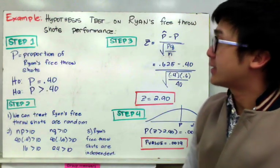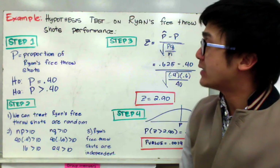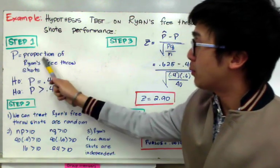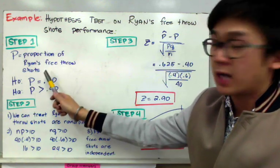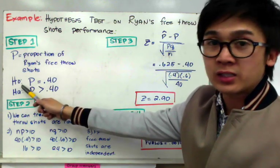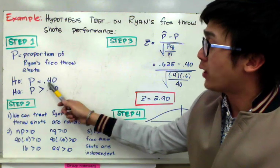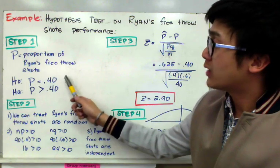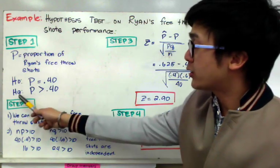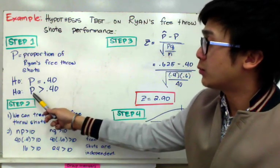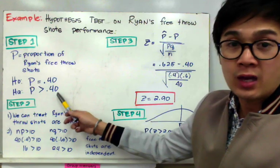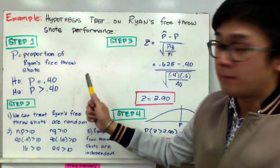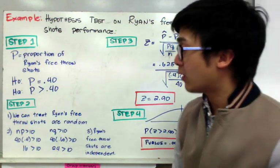For step one of the hypothesis test, we identify the parameter being measured: p, the proportion of Ryan's free throw shots. Our null hypothesis is p equal to 0.40 — we believe Ryan's free throw rate is 40%. Our alternative hypothesis is p greater than 0.40, meaning Ryan's free throw accuracy improved due to his summer training.